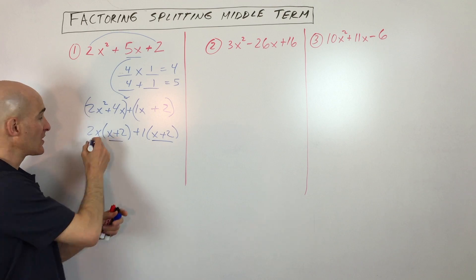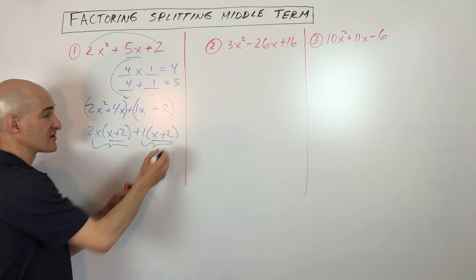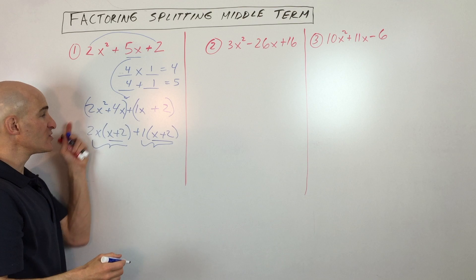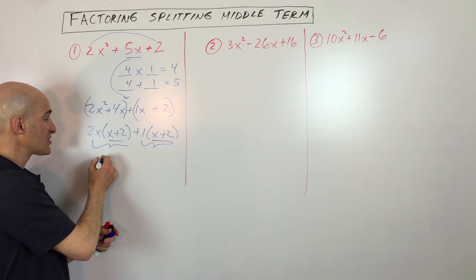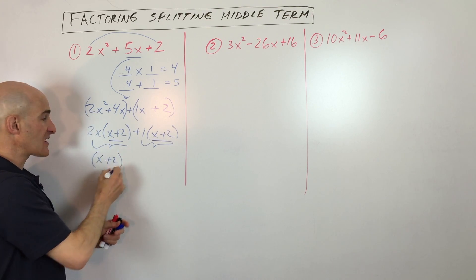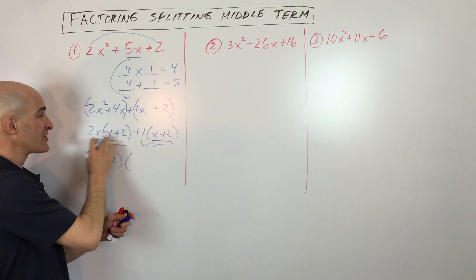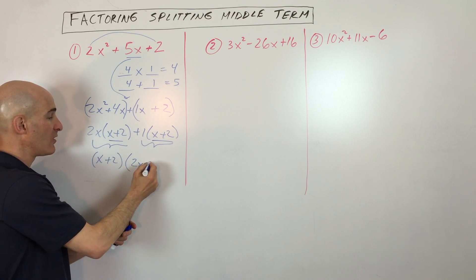See how we have an x plus 2 in common in this group as well as this group? So what you can do is factor out x plus 2 again, as if it was a greatest common factor. And what you're left with is 2x plus 1.